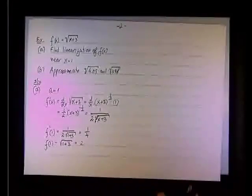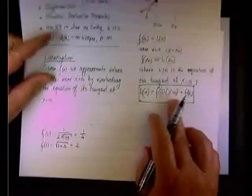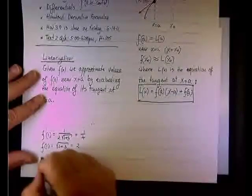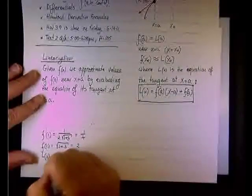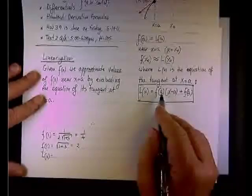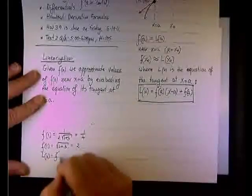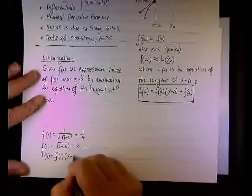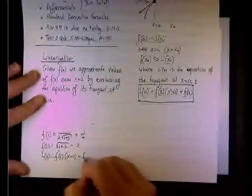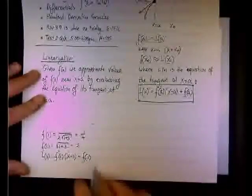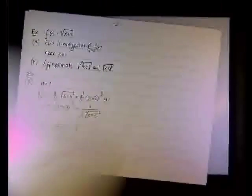Again, I'm plugging it into this expression right here, and I see that L of x will be f prime of 1 - well, let me spell it out - f prime of 1 times (x minus 1) plus f of 1, the point-slope formula.